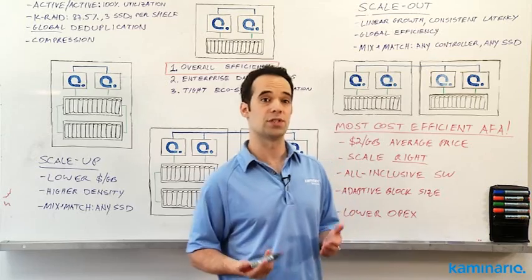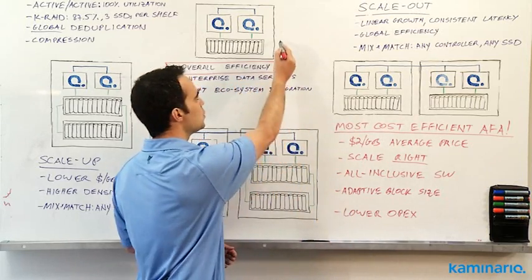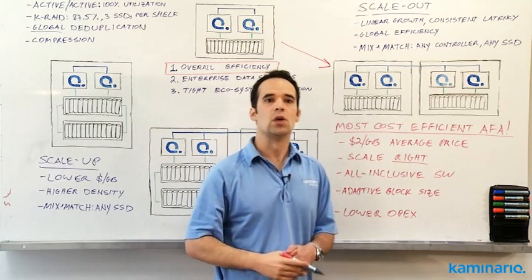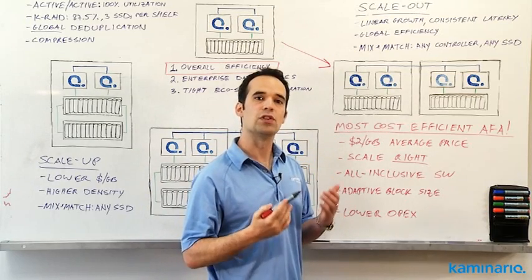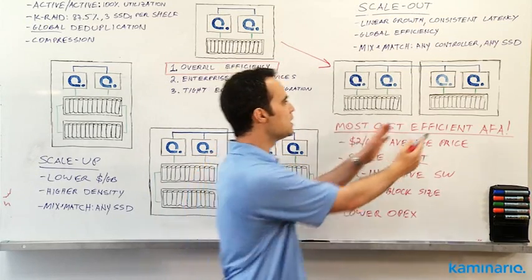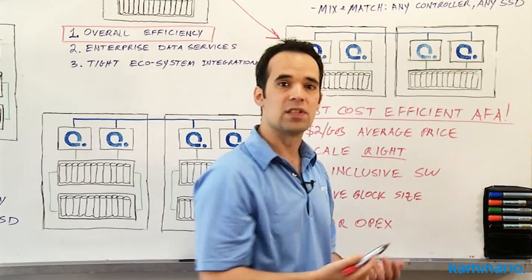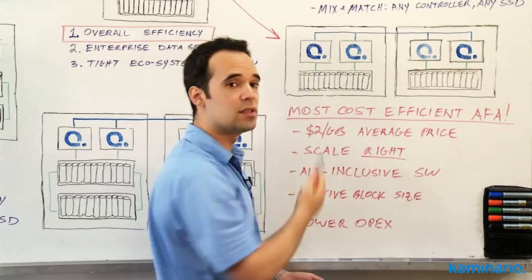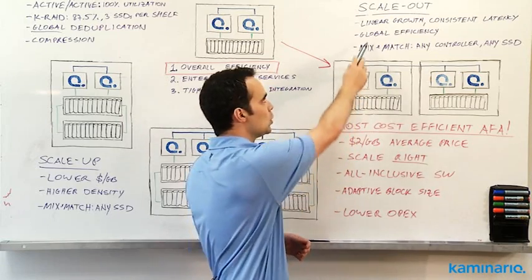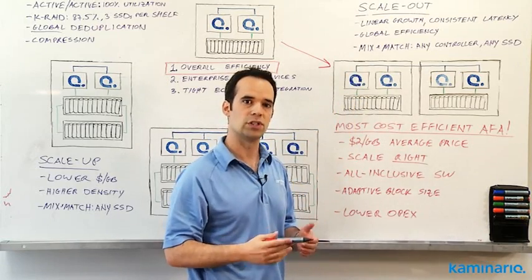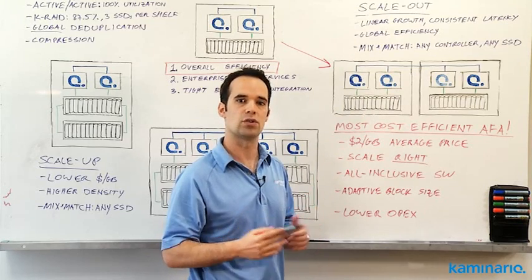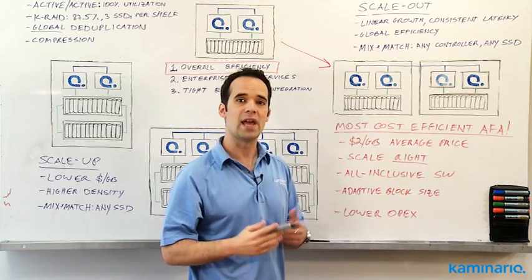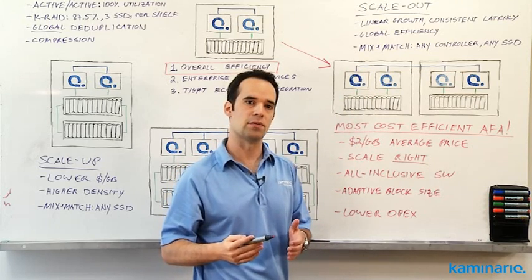If the customer needs more performance and capacity, then the K2 can scale out. Without any disruption and with no downtime, we can add an additional K-block that gives us linear growth of performance and capacity, while keeping consistent low latency, global efficiency with global deduplication that spans all the controllers and SSD shells, and mix and match of any type of controller and any type of SSD.